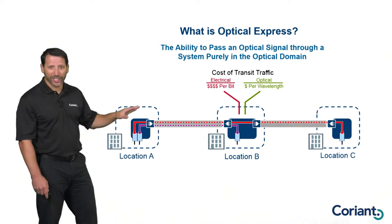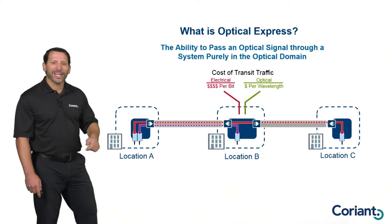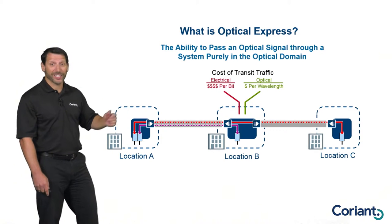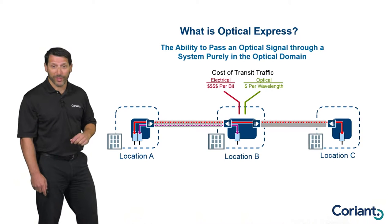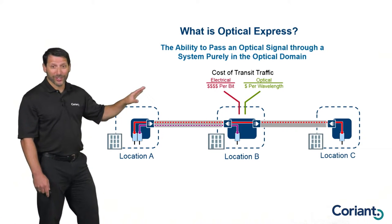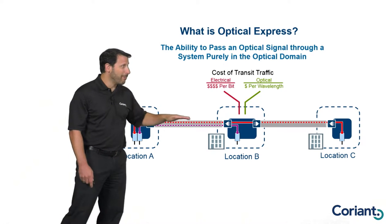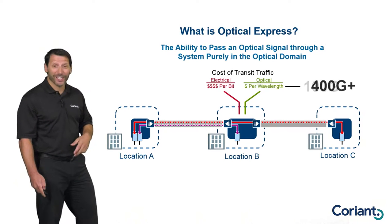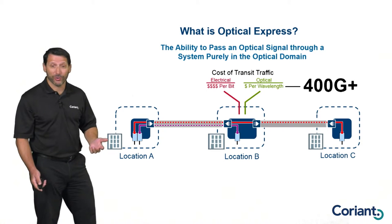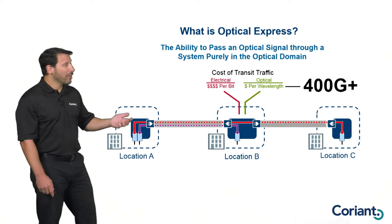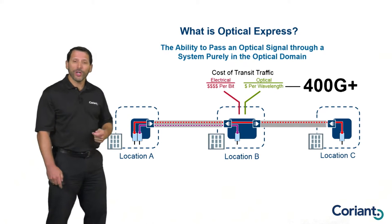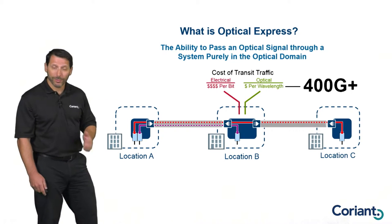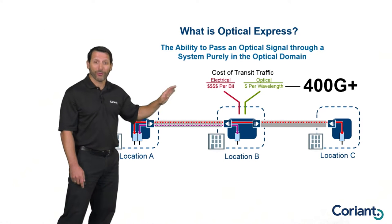When I send that signal through electrically and buy that equipment, the cost is going to be based on the speed of that signal — a certain amount for 10 gig, more for 100 gig, even more for 200 gig. Conversely, with Optical Express, I'm passing the wavelength through — just passing the optical light through. Optical Express doesn't care what the speed of the signal is. Whether it's 10 gig, 40 gig, 100 gig, or 200 gig, it's exactly the same cost. So not only does Optical Express save you money initially, it's going to make the network much more cost-effectively scalable, because as I increase the speed of services, Optical Express doesn't cost one penny extra.